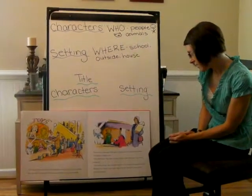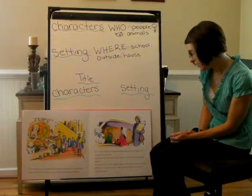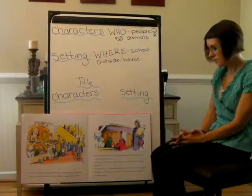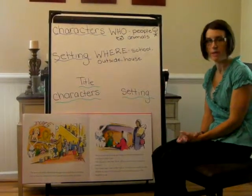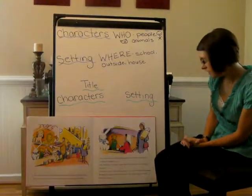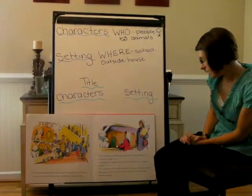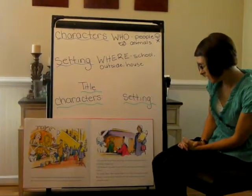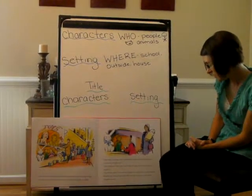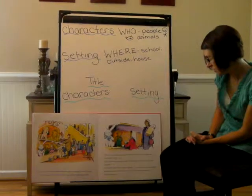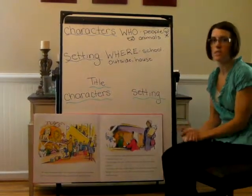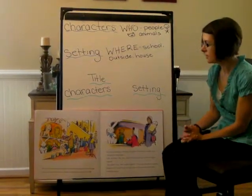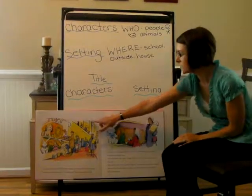Then one morning, a little girl stopped and looked straight into Corduroy's bright eyes. 'Oh, Mommy,' she said. 'Look, there's the very bear I've always wanted.' 'Not today, dear,' her mother sighed. 'I've spent too much already. Besides, he doesn't look new. He's lost the button to one of his shoulder straps.' Now, can somebody tell me the setting of the story so far? Right, they're in a store.